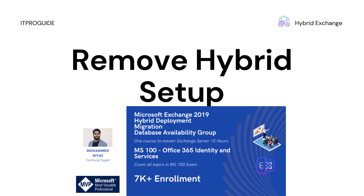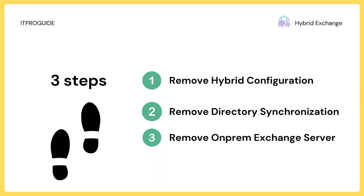In this video we are going to see how to decommission the Exchange server from a hybrid setup. This is divided into three videos. In the first video we will see how to remove the connections like the hybrid setup, send connectors configured on-premises and also in Exchange Online — the configuration removal is the first step, and that is what we are going to cover in this video.